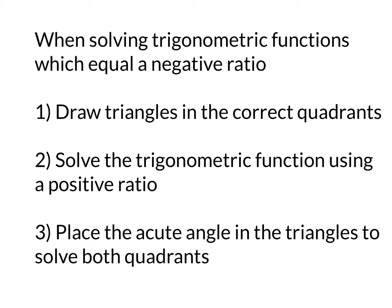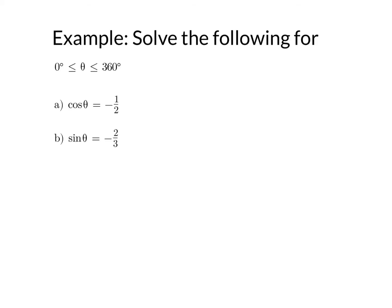With that acute angle, you place it in the triangles to solve for both quadrants. Our examples are when cos equals negative one-half, and when sine equals negative two-thirds.